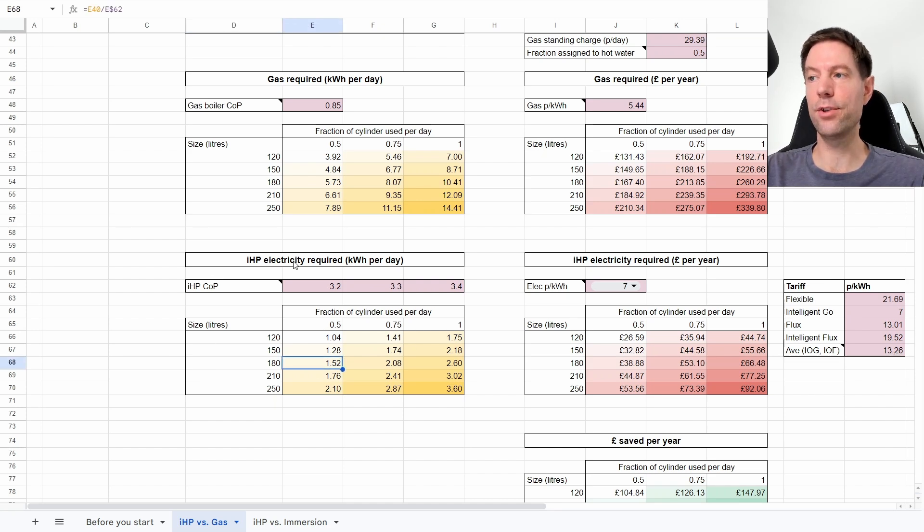And what we're interested in is this section here where I've labeled it IHP electricity required in kilowatt hours per day. So for Kat and I we're in this situation here where we have a 180 litre cylinder and we use about half of it per day, which means in order to reheat the cylinder from one day to the next we need a total of 1.52 kilowatt hours of electricity, which gives us a total annual running cost of about £38.88. So what I'm gonna do, I'm just gonna take a copy of that cell there, I'm just gonna stick it over here for no particular reason.